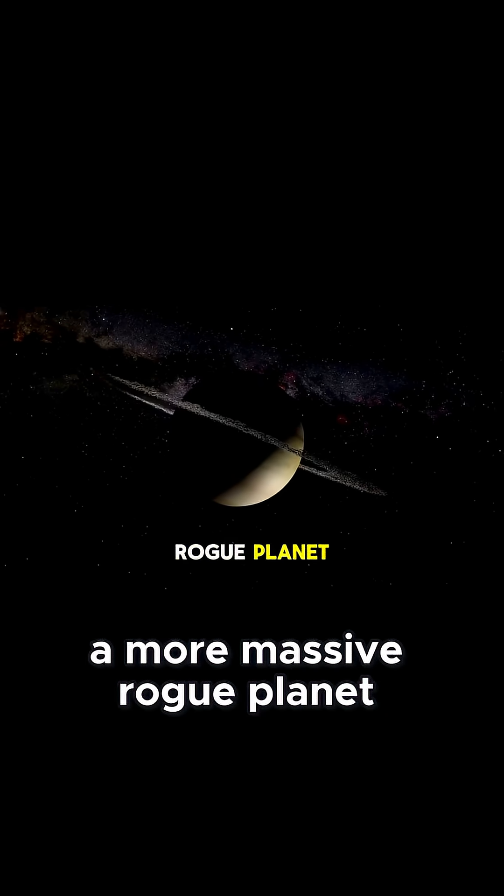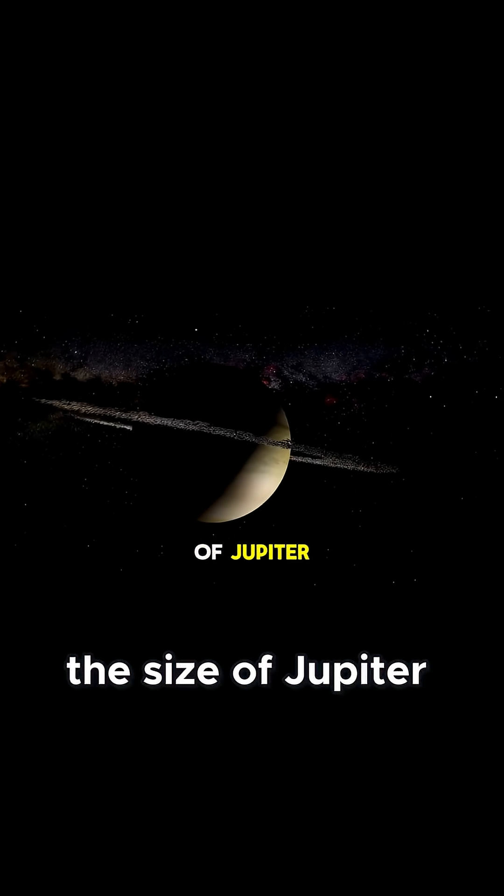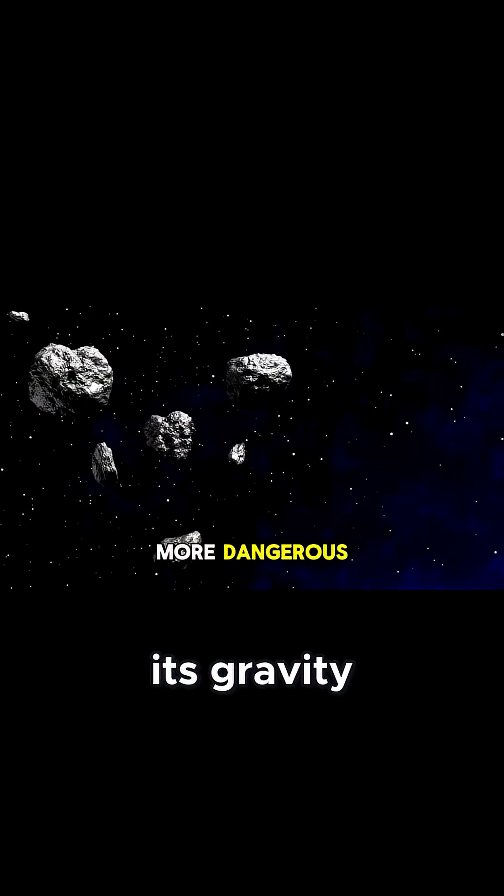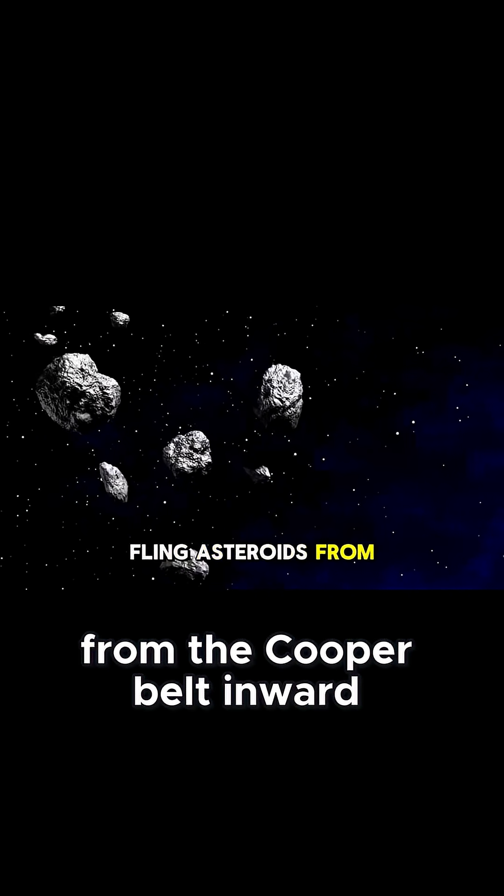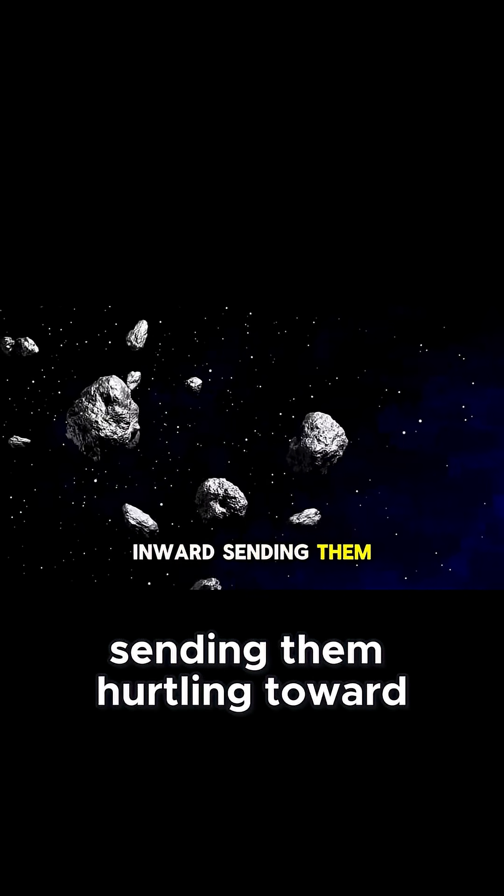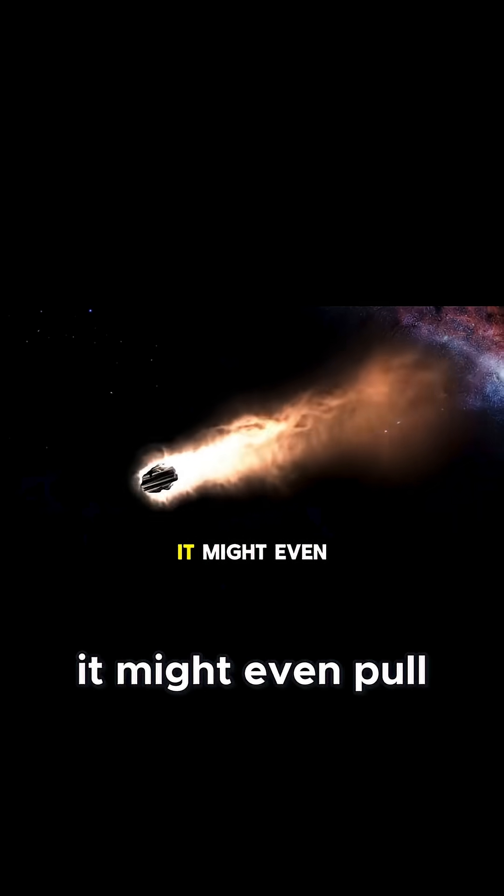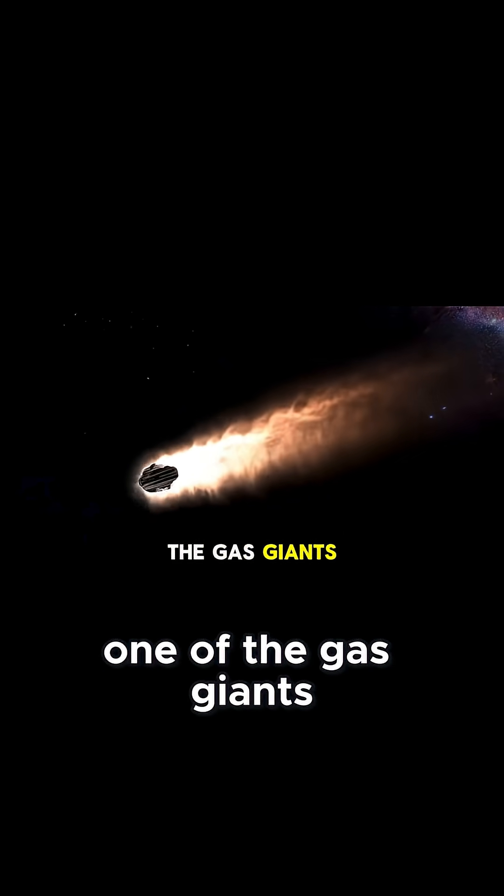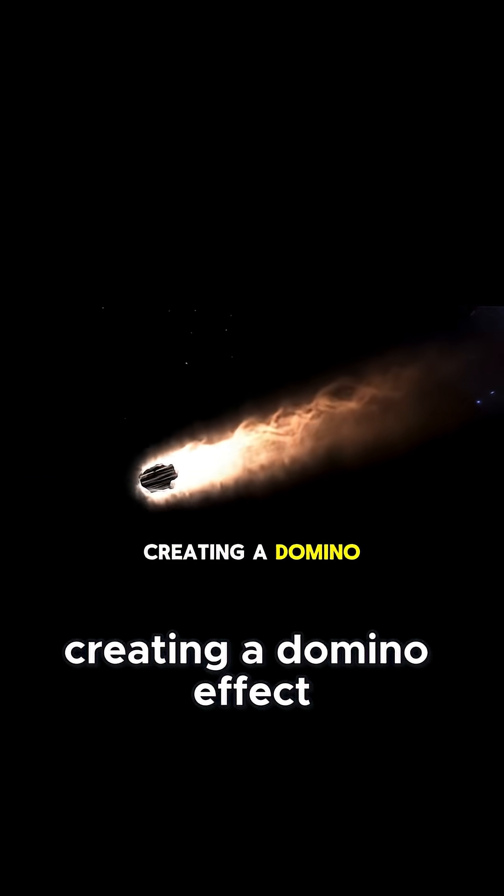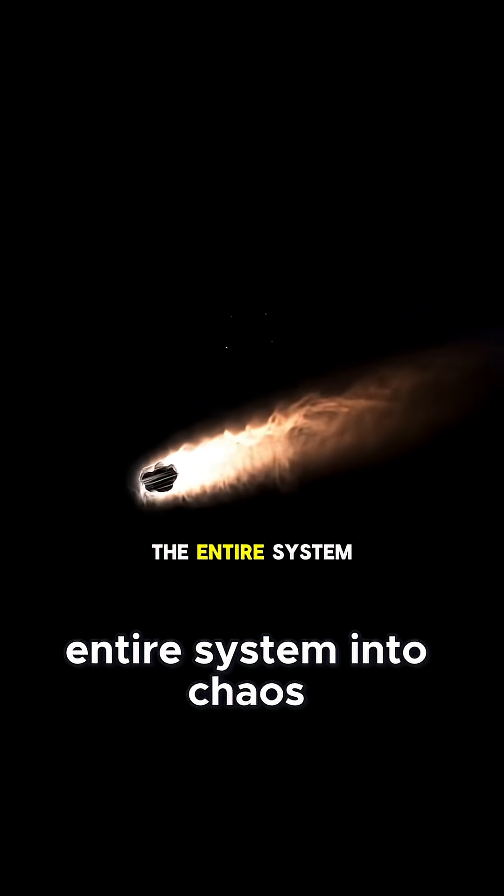A more massive rogue planet, something the size of Jupiter, would be far more dangerous. Its gravity could fling asteroids from the Kuiper belt inward, sending them hurtling toward the inner planets. It might even pull one of the gas giants out of orbit, creating a domino effect that would throw the entire system into chaos.